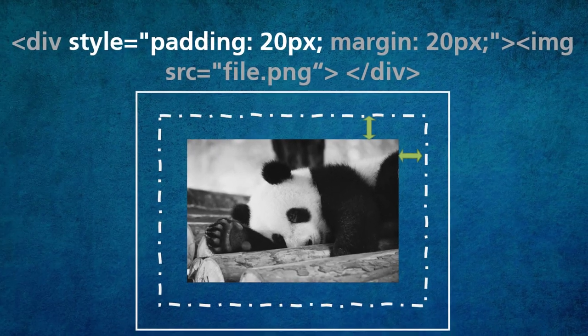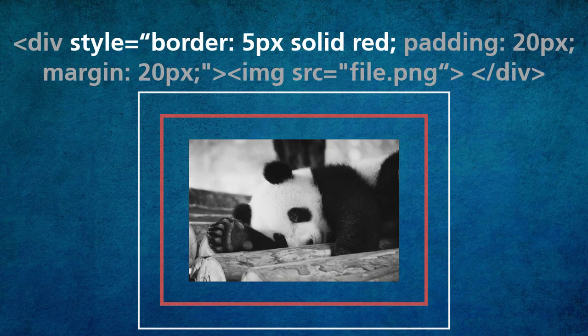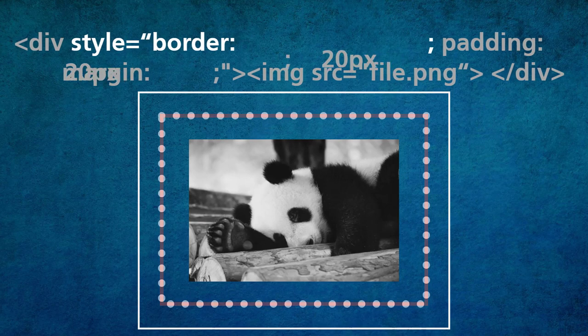Now another thing I can do is actually specify the properties of the border. For the style, I added some code — I put a border of five pixels, a solid line, and red. The width and color are optional, but the border style is required. In this case I have solid, but you can also have dashed or dotted. If you don't specify a color and there's text, then the border will just be the color of that text. Let's play around with the border properties just a little bit.